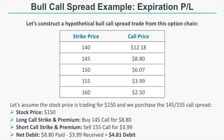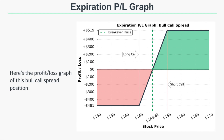Looking at the expiration risk graph, the bull call spread has limited risk and limited profit potential. The maximum loss potential is the debit paid times 100. Since we purchased the spread for a $4.81 debit, the maximum loss potential is $4.81 times 100, which is $481. This maximum loss occurs at any stock price equal to or below $145, because if the stock price is below 145 both the long call and short call expire worthless, and the net loss equals the debit paid times 100.